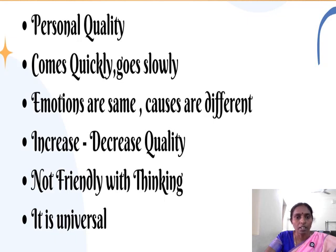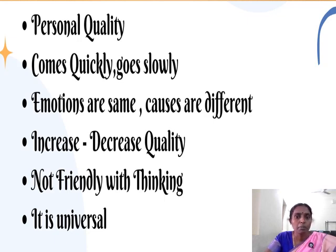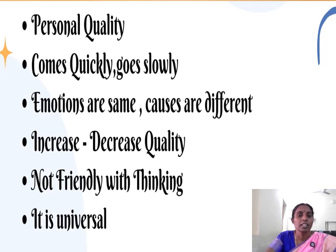Emotion is expressed based on personal quality, because one incident may affect different individuals differently. Emotions come quickly and go slowly, and emotional experience can persist for a long time. Also, the causes of emotions are different for different people, and individuals are often unable to rationalize their emotional state because it is not aligned with their thinking.